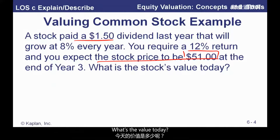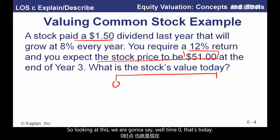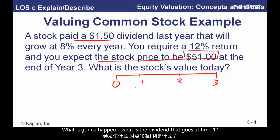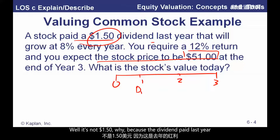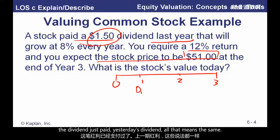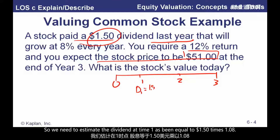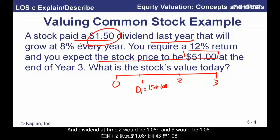There are a couple of pitfalls here. First, you've got to make sure you get your timeline right. Time zero is today. One year from now, two years from now, and three years from now. The dividend at time one is not $1.50, because that was the dividend already paid — the dividend just paid. What we need is the dividend to be 8% greater than that at time one. So the dividend at time one equals $1.50 times 1.08. The dividend at time two will be times 1.08 squared, and at time three, times 1.08 cubed. This $51 also comes at the end of year three.